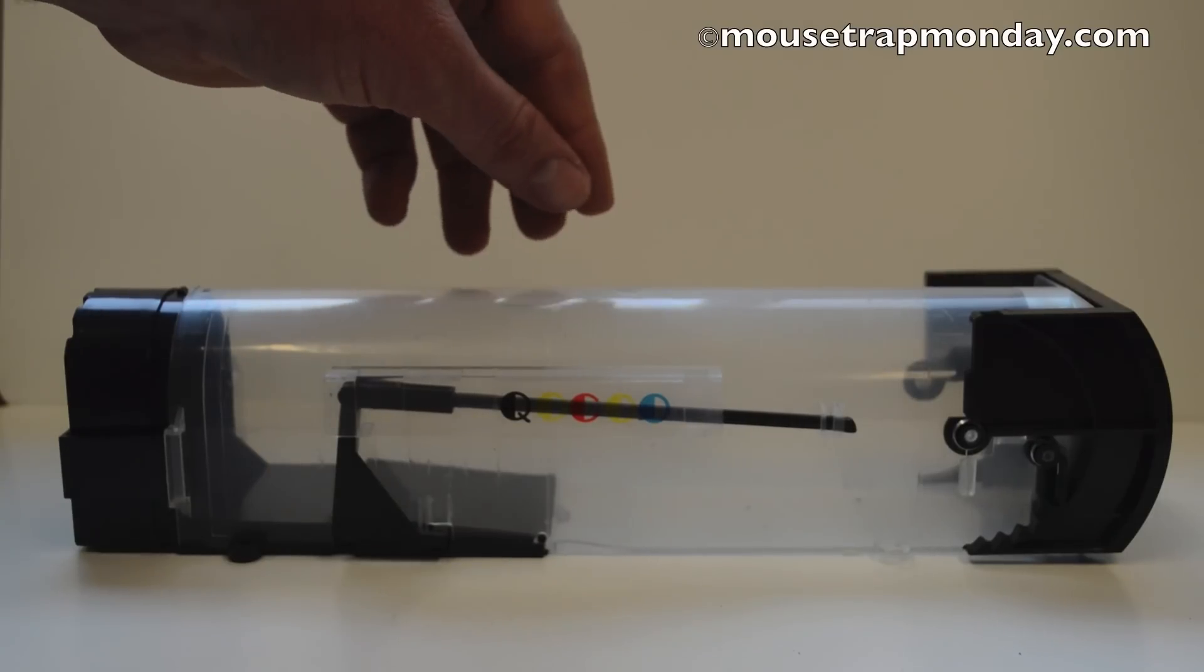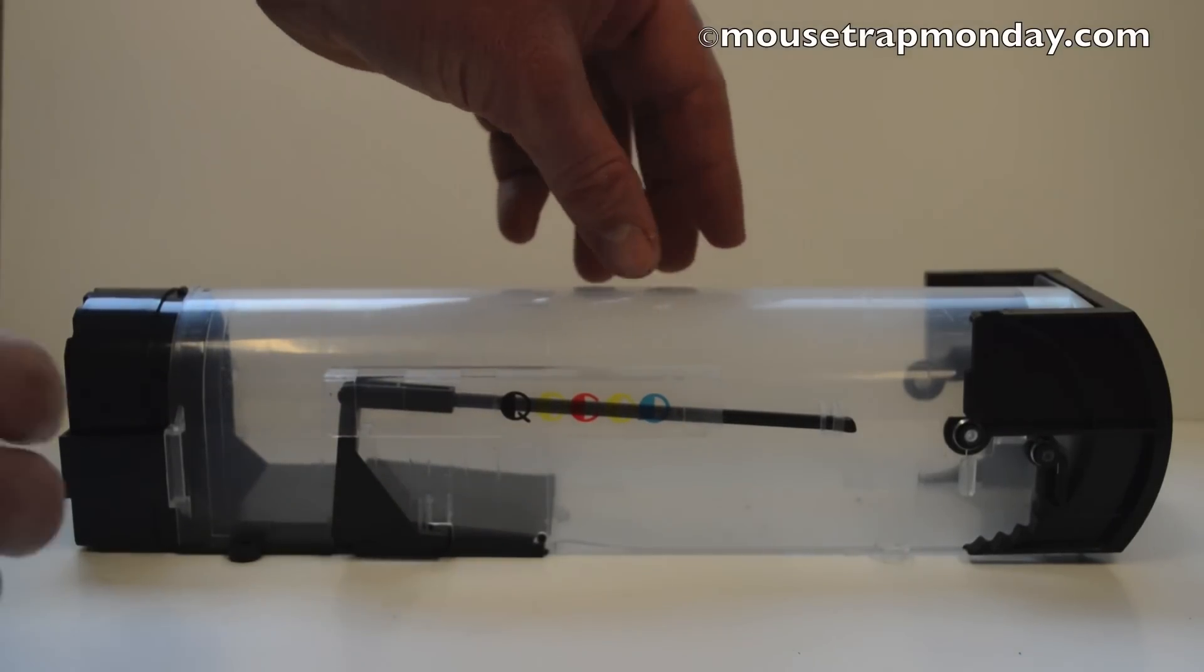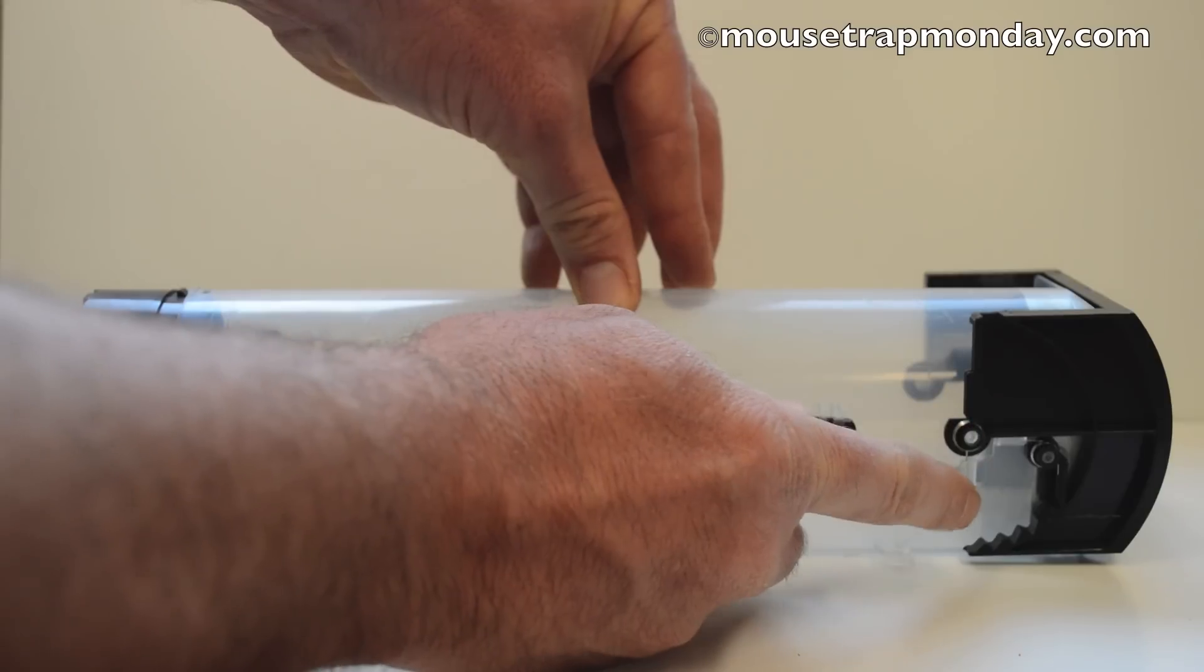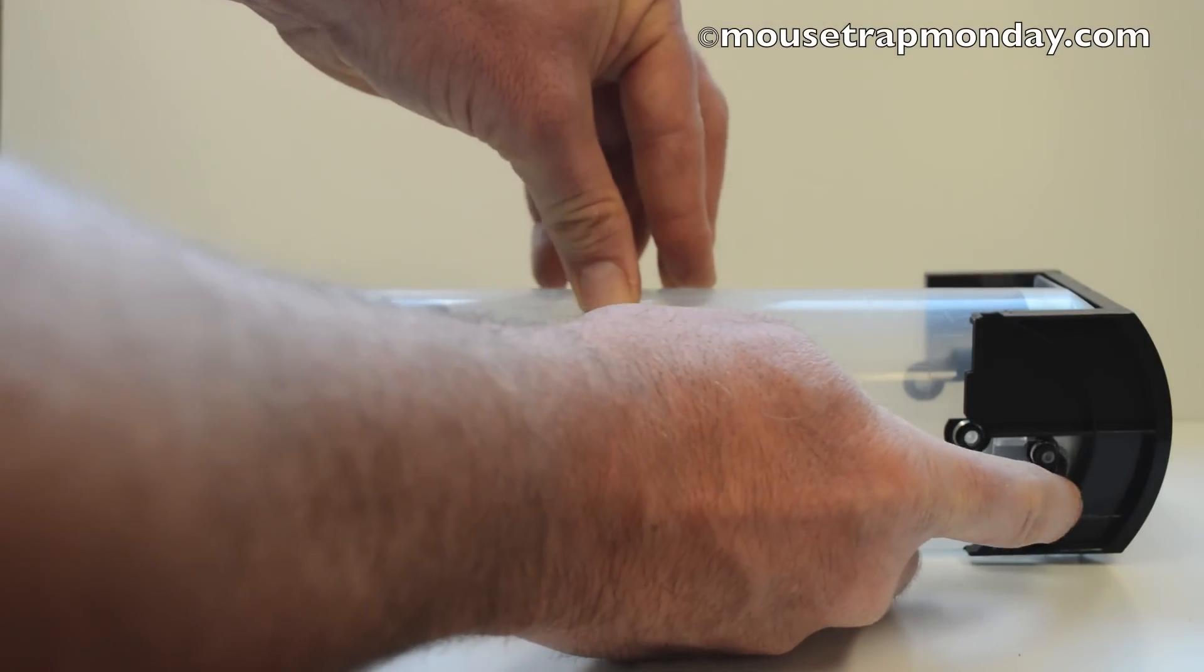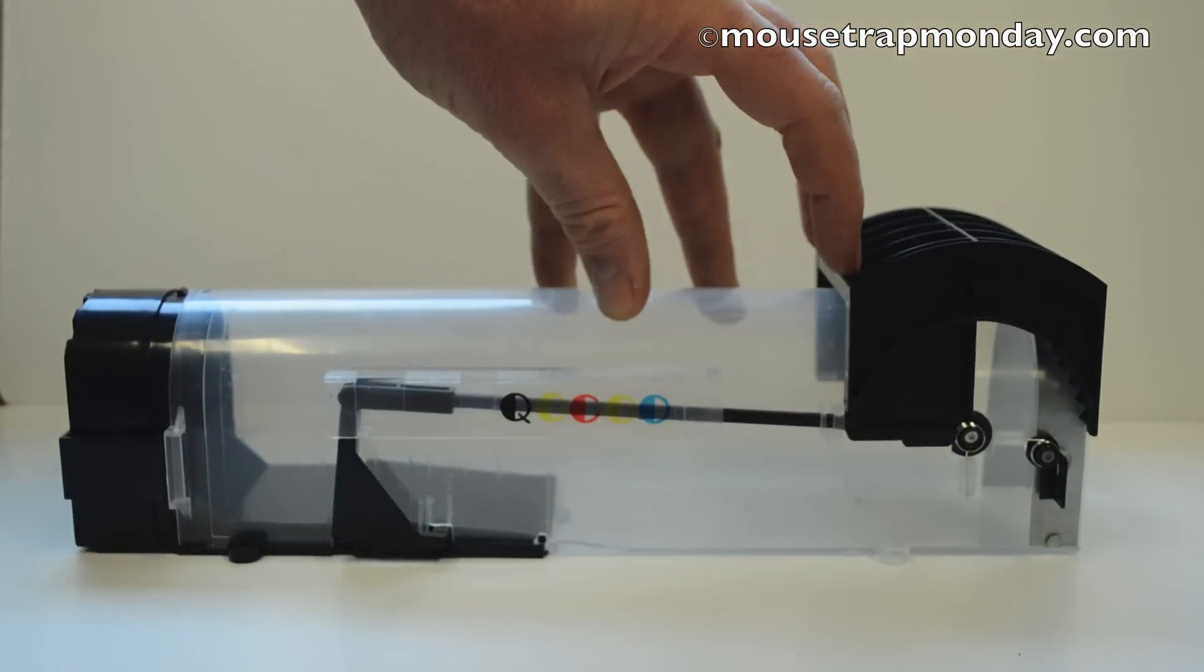But the mechanism is exactly the same on all these different brands. The way it works is there's a little door on a hinge here that has some latches. You pull back that latch, pull it up, and it catches right there on this rod that's connected to the trigger pad.